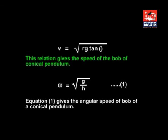The relation gives the speed of the bob of conical pendulum. ω = √(g / h). The equation gives the angular speed of bob of a conical pendulum.